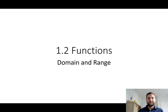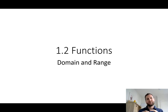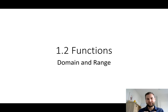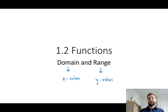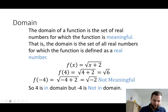Domain and range refer to the values of a function that are acceptable or allowed within the function — in other words, what numbers or values can you actually find on the graph. Domain refers to the X values and range refers to the Y values that are included in our function.